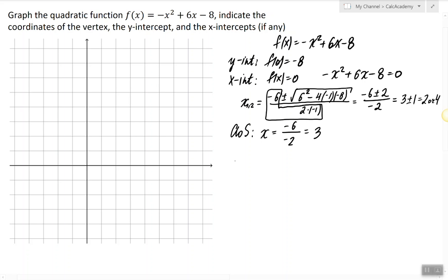Now if we know the axis of symmetry, we know immediately where the vertex lives, meaning we know the x-coordinate of the vertex. To find the y-coordinate of the vertex we just plug in three into the function. So we have negative three squared plus six times three minus eight. So we have negative nine plus 18 minus eight, which is one. So the vertex is at (3, 1).